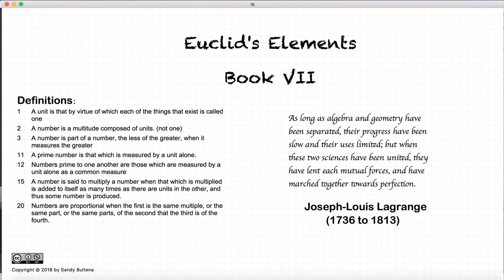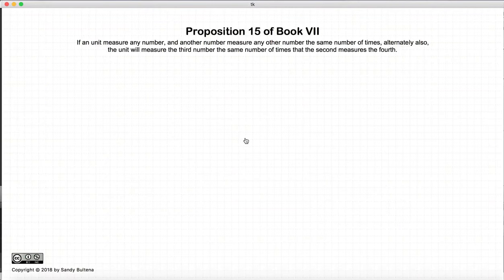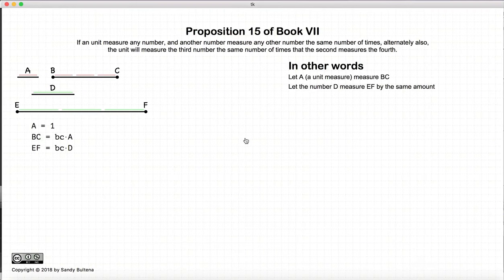Hi, and welcome to my tutorials on Euclid's Elements, Book 7. This video presentation is going to be on Proposition 15 of Book 7. Now, in this proposition, we have a unit A, and a unit means the number 1, and we have that A measures BC a certain number of times, and D measures EF the same number of times.